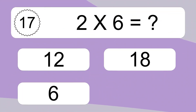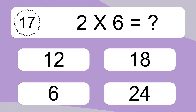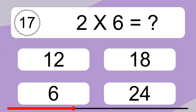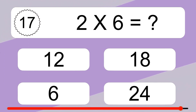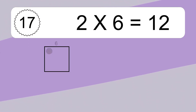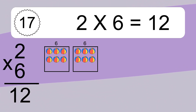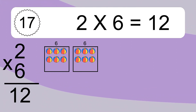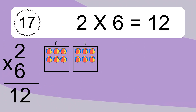Two times six equals what? Two times six equals twelve. We have two boxes, and each box has six colorful balls inside. If you count all the balls in all the boxes together, you will have two times six balls. This equals twelve balls.